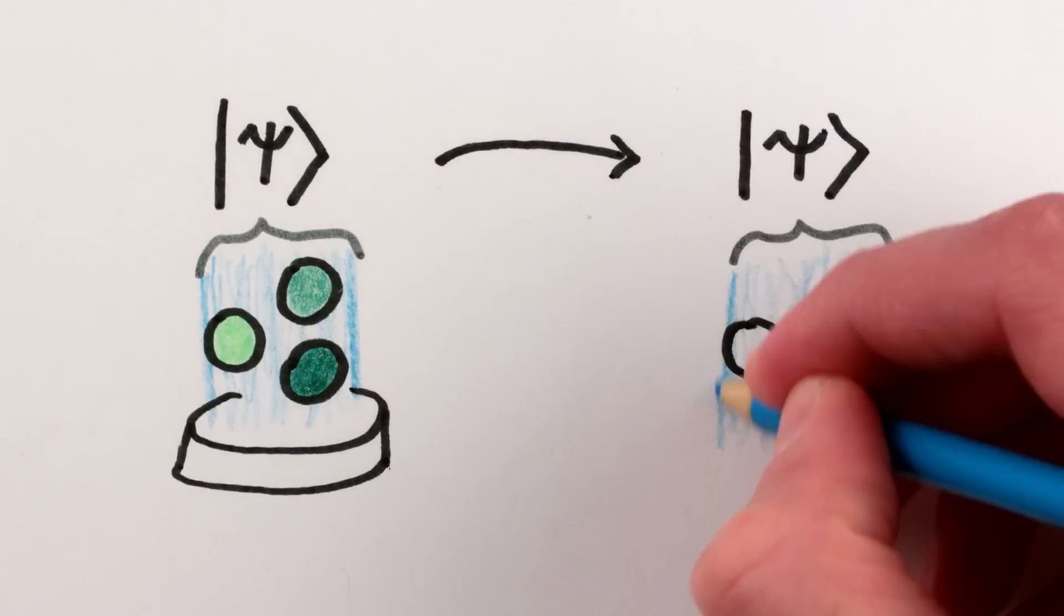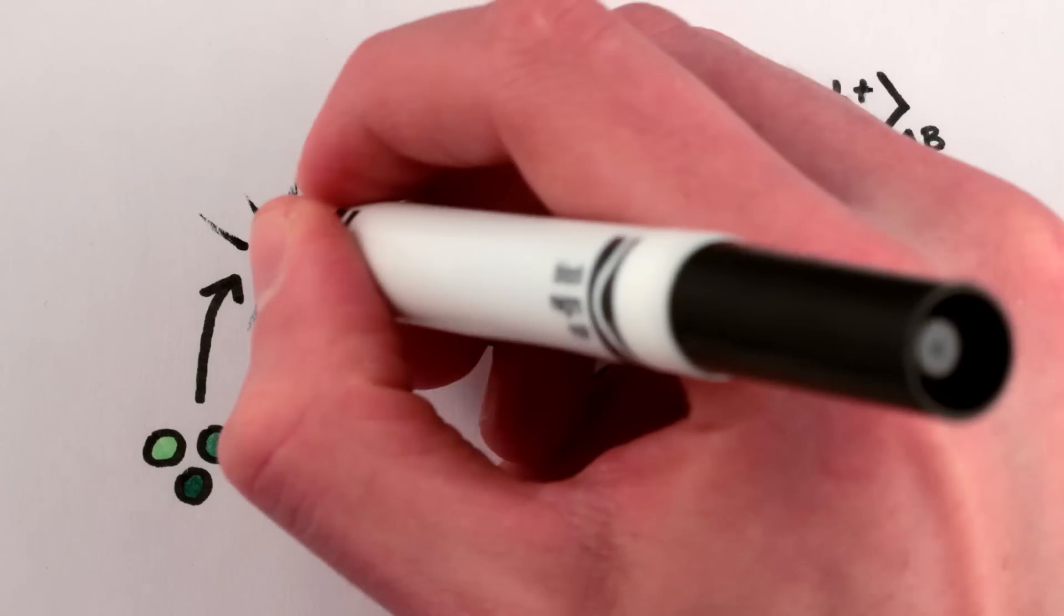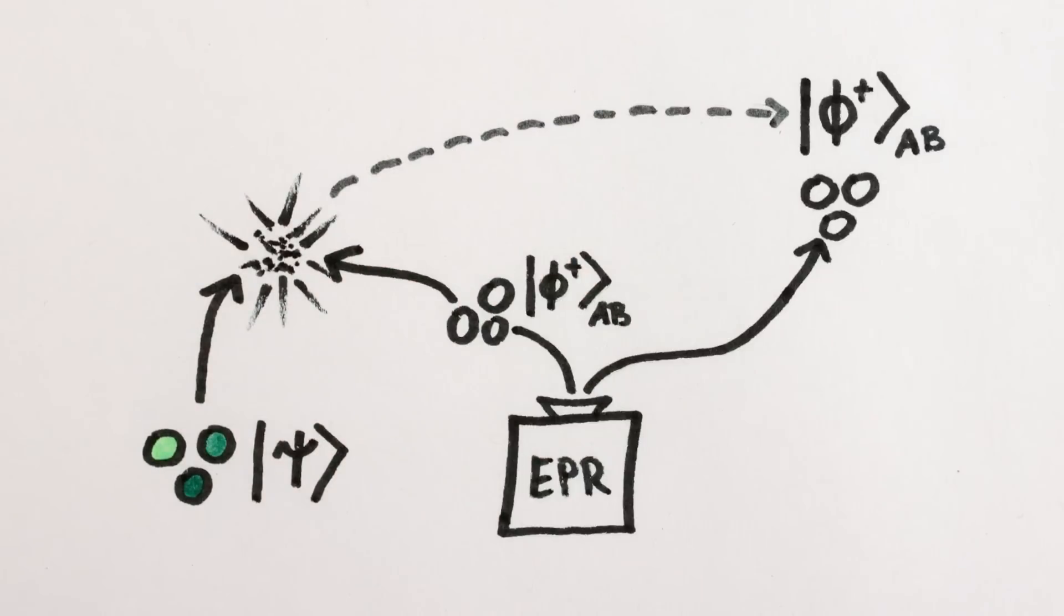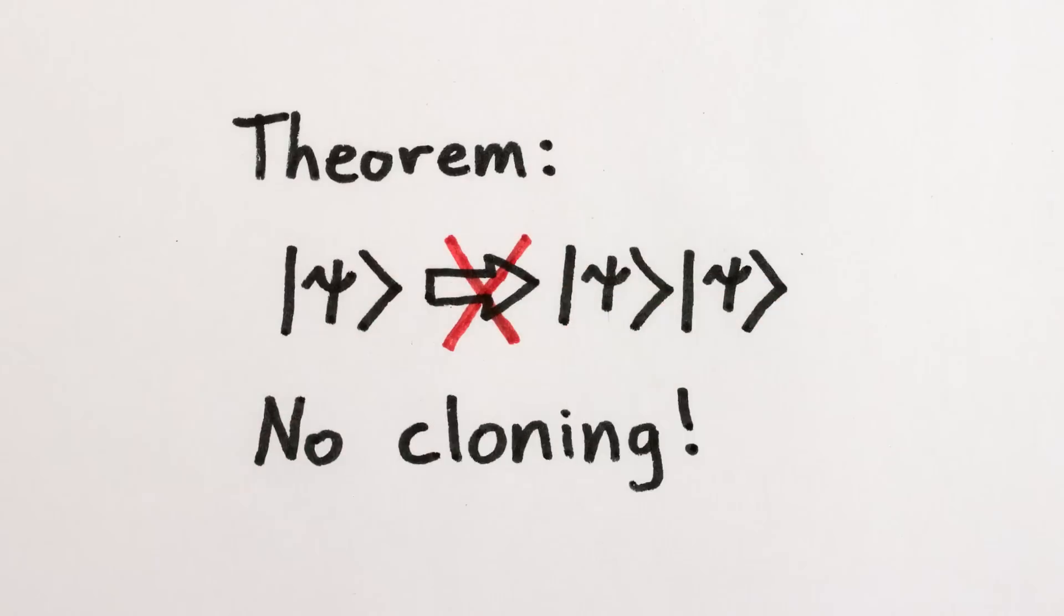It is impossible to create an identical copy of a quantum state without destroying the original. In fact, you have to destroy the original arrangement in order to extract all the necessary information from it to construct the new, teleported state. The relevant theorem in quantum mechanics is called the no-cloning theorem.